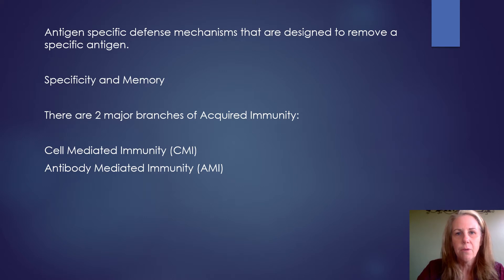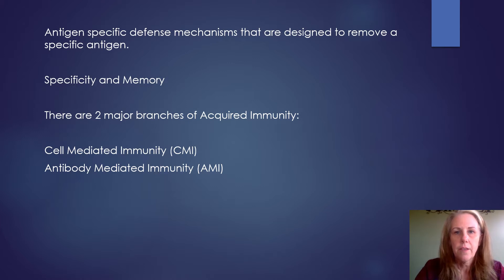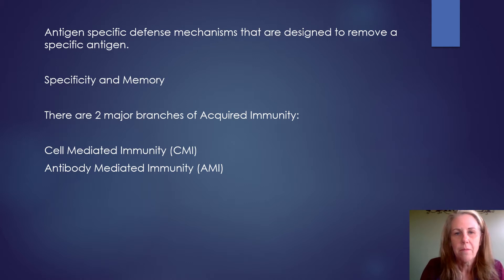The two properties that distinguish the acquired immune response from the natural resistance are specificity and memory. When we think of this particular part of the immune system, there are two major branches: cell-mediated immunity and antibody-mediated immunity. The antibody-mediated immunity has an older term — that's called humoral immunity — but we're going to call it antibody-mediated immunity.